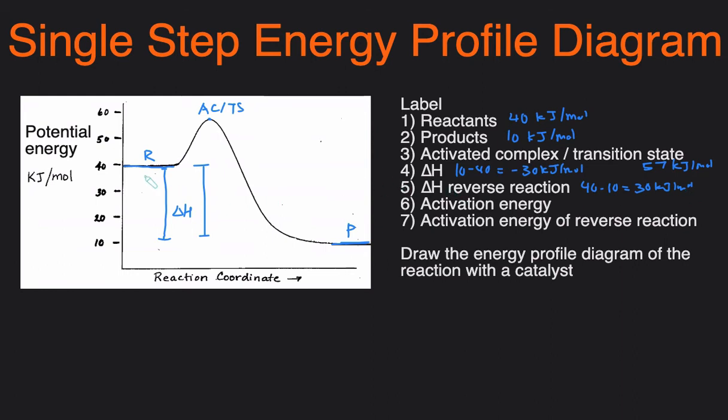Because if it's in the reverse reaction, then this will be the product and that will be the reactants. So you can see that the delta H of the forward reaction and reverse reaction have the same magnitude, but just different signs.